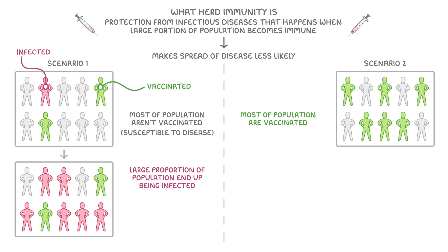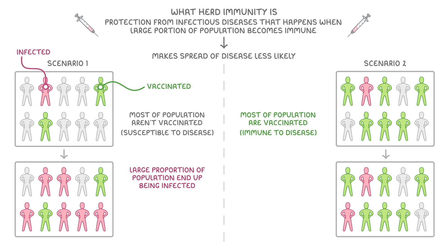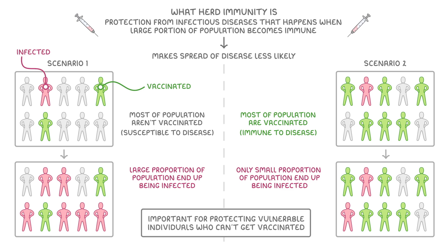In scenario two though, most people are already immune to the disease and so can't transmit the pathogen to others. So even if the same number of people become infected initially, there's a lower chance that the few non-vaccinated people will come into contact with the pathogen, so only a small portion of the population ends up being infected overall. This is particularly important for protecting vulnerable individuals who can't get vaccinated, like newborn babies, elderly people, or people with certain medical conditions or compromised immune systems.